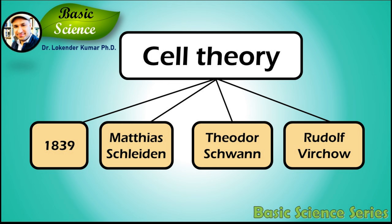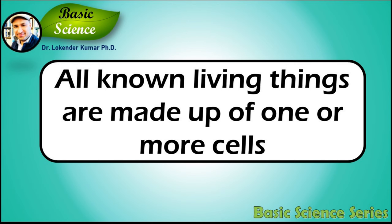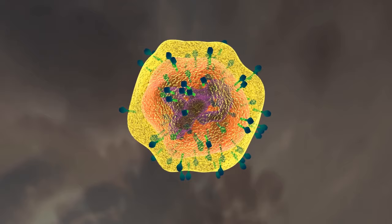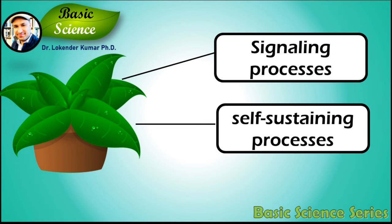There are three famous postulates of cell theory. Number 1: All known living things are made up of one or more cells. Living things means life. Life is a characteristic that distinguishes physical entities that have biological processes, such as signaling and self-sustaining processes.